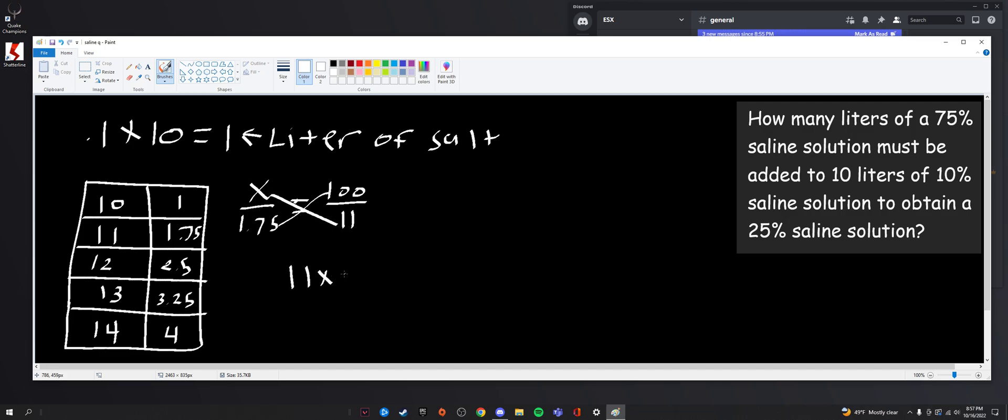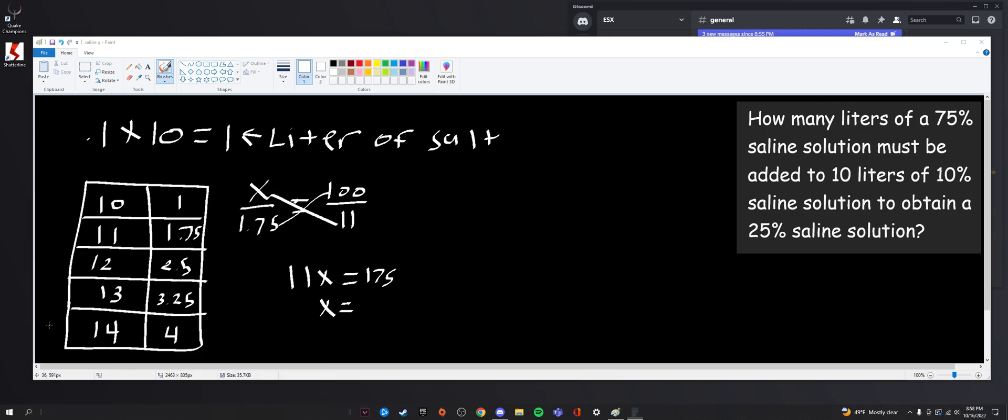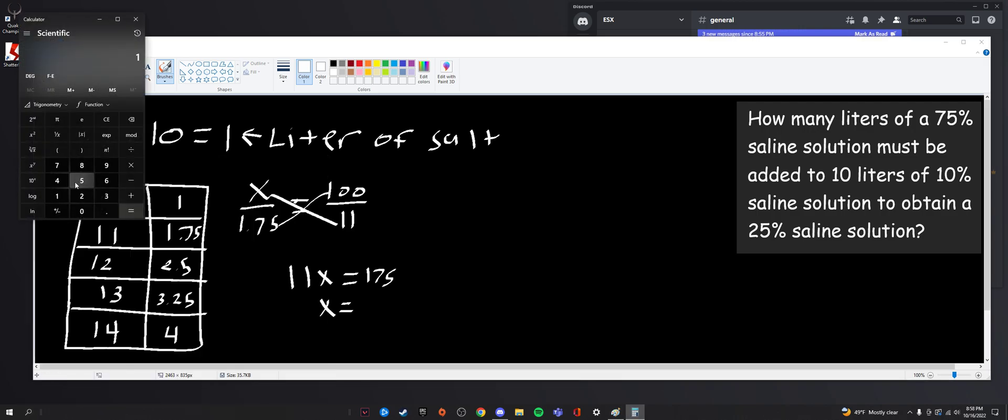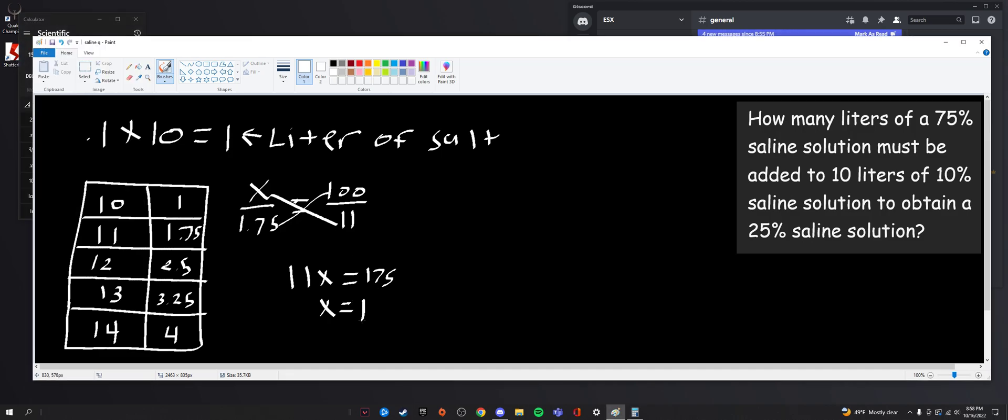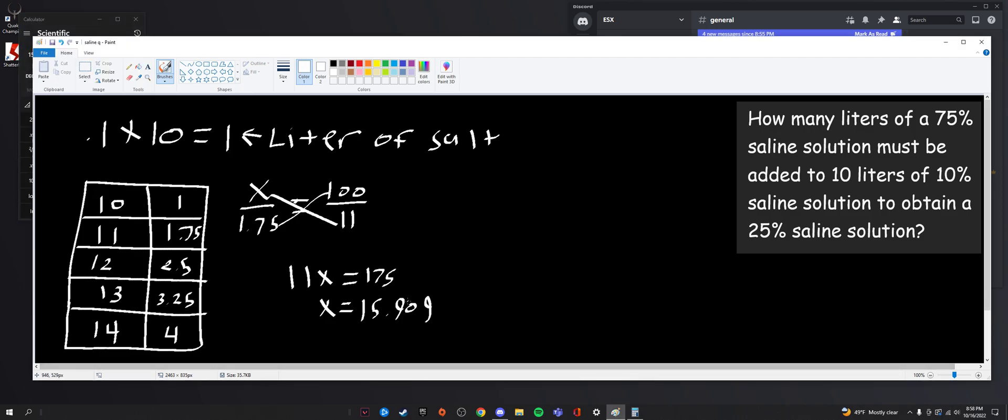We get 11x equal to 175, therefore x is equal to, break out the calculator. And we do 175 divided by 11, we get that number. So 15.909, is that what it is? Yeah, 909 repeating. So that is the percent that is salt, meaning 1.75 liters of the 11 liter solution is salt for about 15.909%.